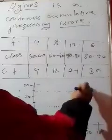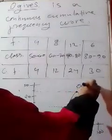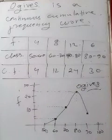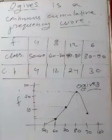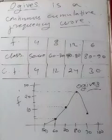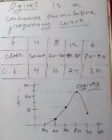So now, this line is called Ogive. Or this is the line. This is called Ogive. Now, with this, we can find the median or mode.